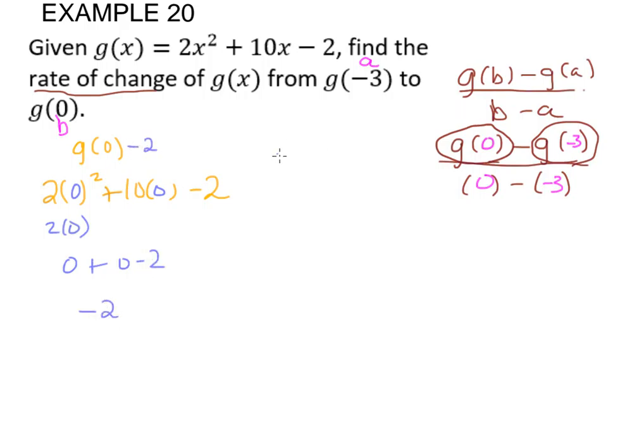Now let's find out what g of negative 3 is. So we take our formula: 2 times something squared plus 10 times that something minus 2. We're going to plug in negative 3.